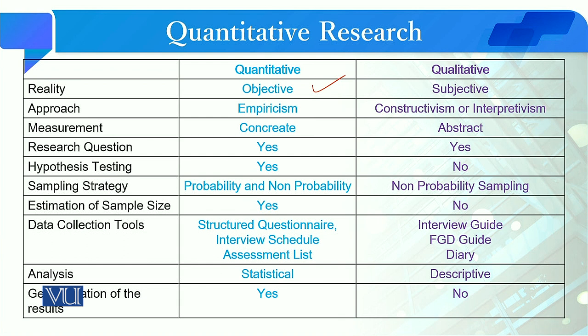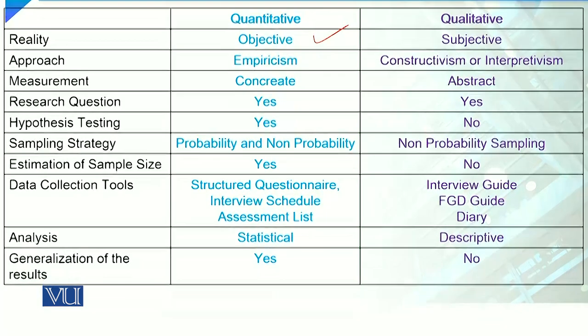In quantitative research we conduct statistical analysis and hypothesis testing in order to test our hypotheses, but qualitative research is descriptive in nature — we develop themes and concepts on the basis of the findings. Yes, we can generalize the results of a quantitative study, but we cannot generalize the results if the study is qualitative in nature.